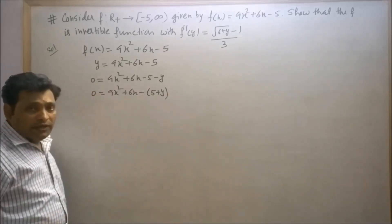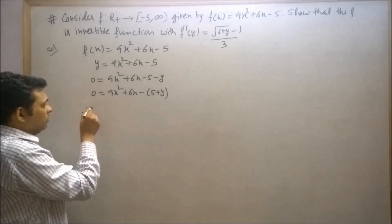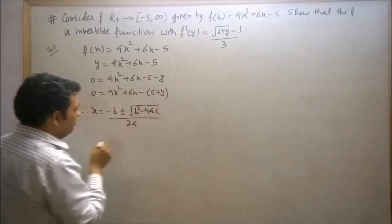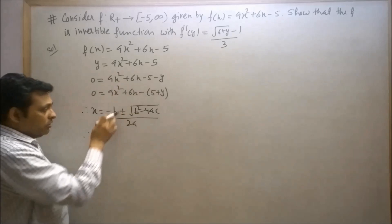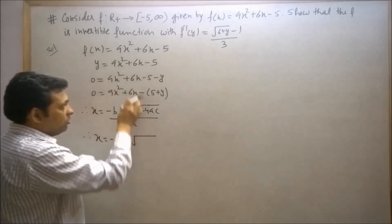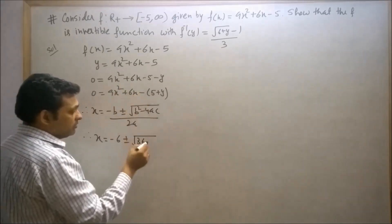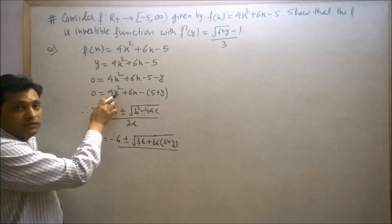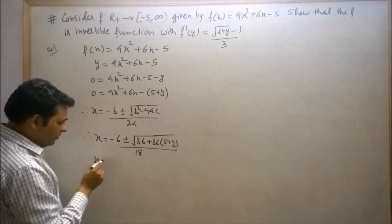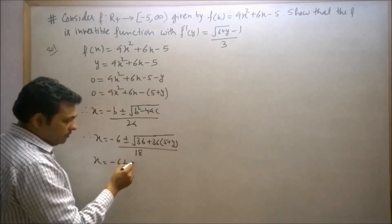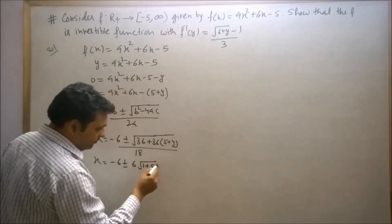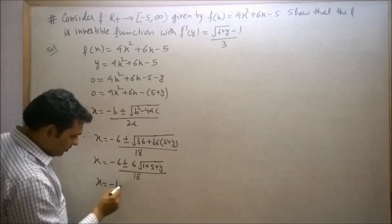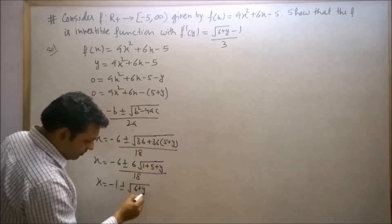We find the value of x using the quadratic formula: x = (-b ± √(b² - 4ac)) / 2a. Here b = 6, a = 9, c = -(5 + y). So x = (-6 ± √(36 + 36(5 + y))) / 18, which simplifies to x = (-1 ± √(6 + y)) / 3.